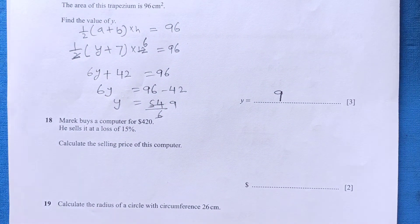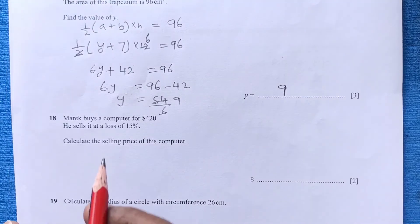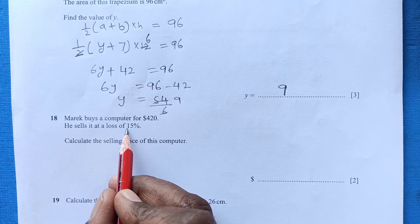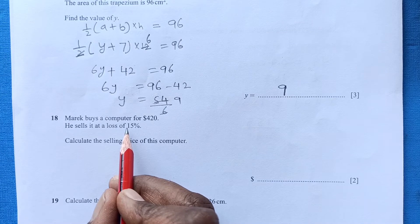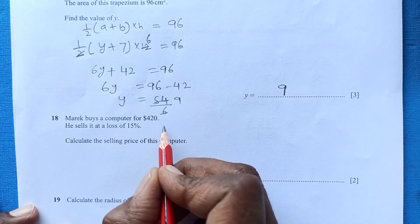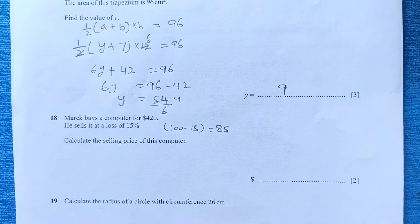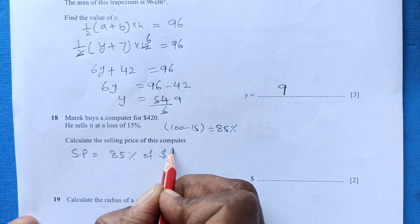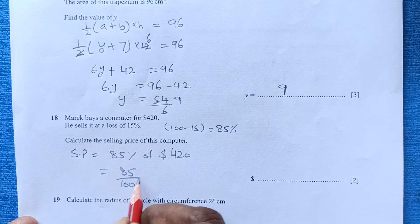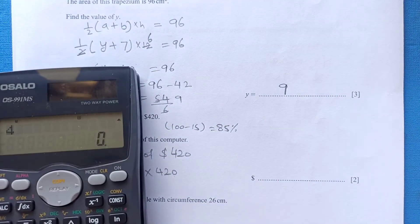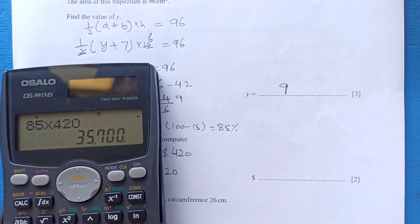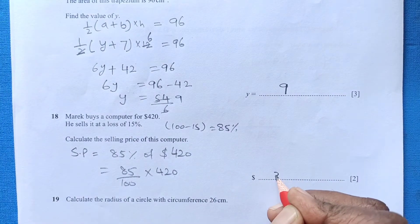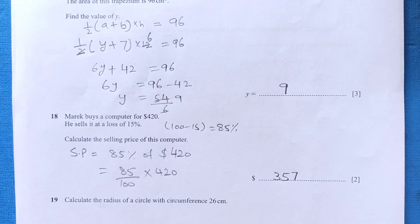Question 18: Mike buys a computer for $420 and sells it at a loss of 15%. To calculate the selling price, since there is a 15% loss, the selling price is 100 − 15 = 85% of $420. So it is 85 over 100 times 420 = $357. That is the selling price.